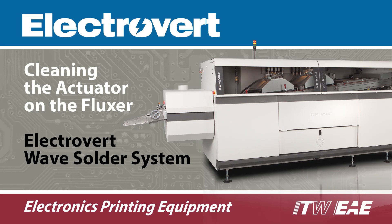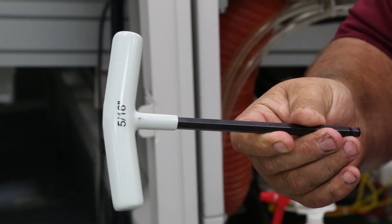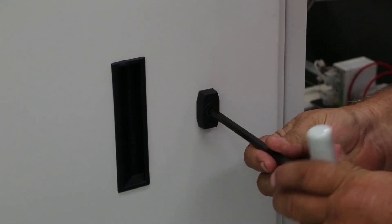Before you begin, you need to turn off the power to the system. Using a 5/16th allen wrench, open the back cabinet door.